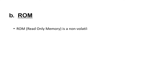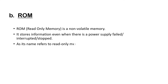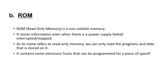Now for ROM — ROM is Read-Only Memory, which is non-volatile memory. It stores information even when there is a power supply failure or interruption. As its name suggests, we can only read the programs and data stored on it. It contains some electronic fuses that can be programmed for specific information. It is also known as permanent memory.